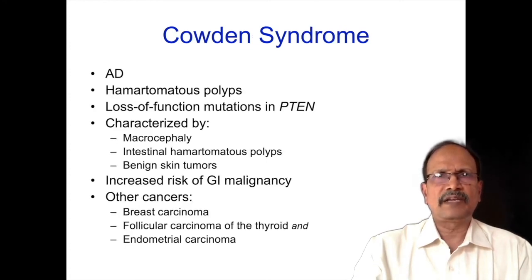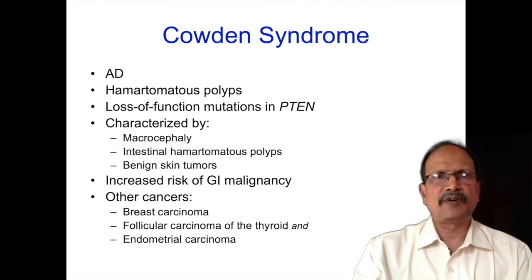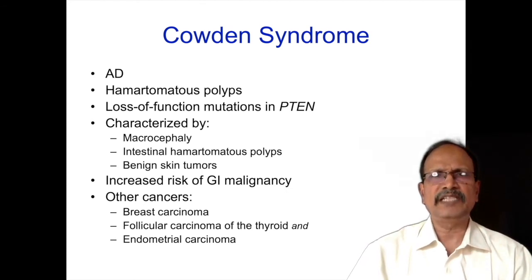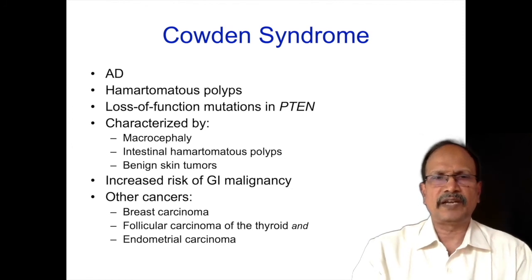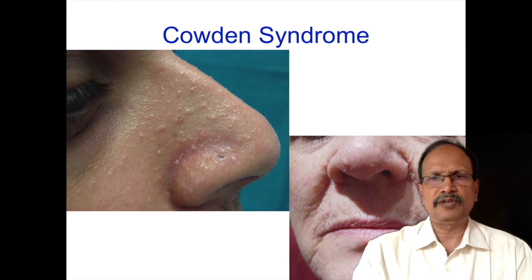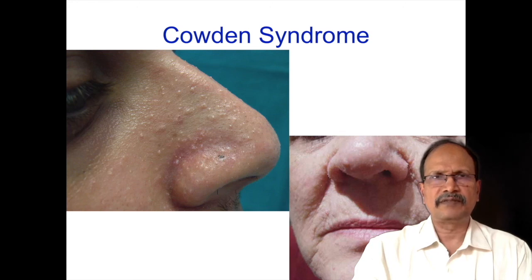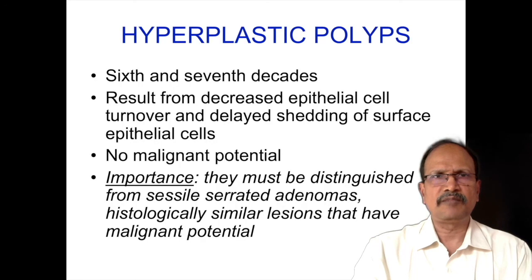Coming to Cowden syndrome — it is also associated with hamartomatous polyps, acquired in an autosomal dominant fashion with loss of heterozygosity involving the PTEN gene. Patients have characteristic features including macrocephaly, intestinal hamartomatous polyps, benign skin tumors, and increased risk of GI malignancy. Other cancers can also occur, such as breast cancer, follicular carcinoma of thyroid, and endometrial carcinomas. Small verrucous-appearing nodules or tumors involving the skin, especially in the naso-labial region, are the benign skin tumors. When you see multiple benign skin tumors, the possibility of Cowden syndrome should be considered and colonoscopy may reveal intestinal polyps.